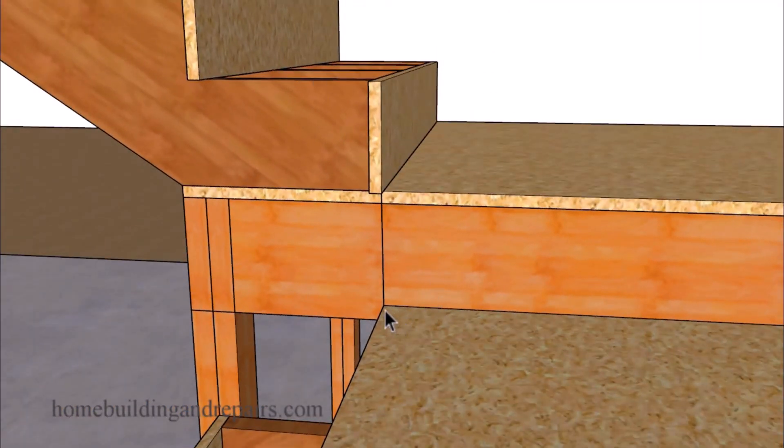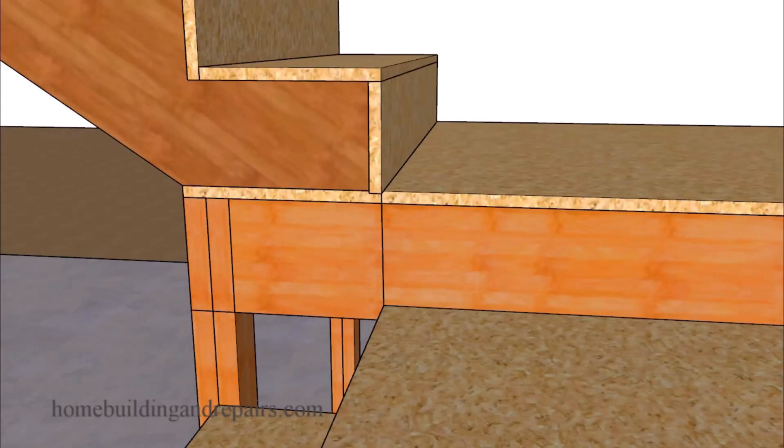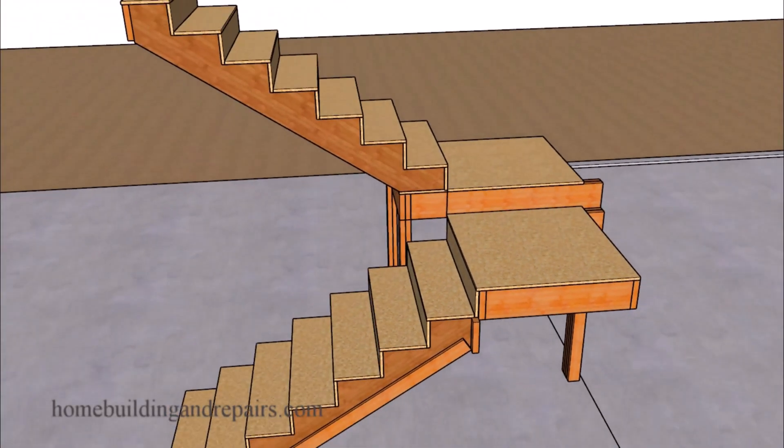I went ahead and drew a straight line here or a plumb line. This is usually how the architect has it drawn on the plans. The last thing we need to do will be to install the treads.